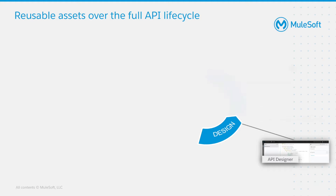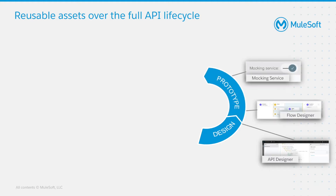The next step is to publish our specification to Anypoint Exchange, where users can have a look at it, provide feedback on the specification for future improvements, and activate the mocking service so they can start developing against the mocking services before the implementation of the actual API has even started.